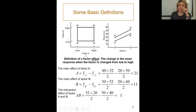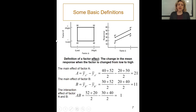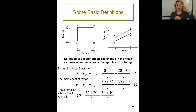Factor A is temperature, which has a low level of 30 degrees centigrade and a high level of 60 degrees centigrade — those are the two levels for Factor A. Factor B is the purity of methanol, with a low level of 70 percent and a high level of 85 percent.